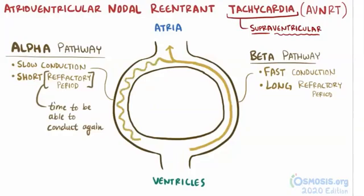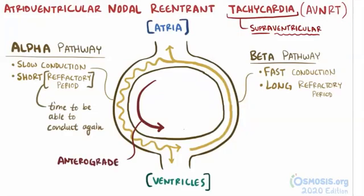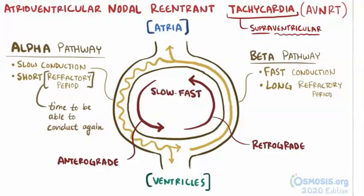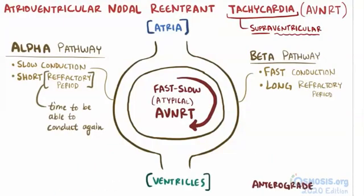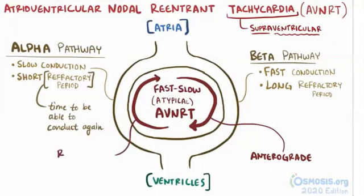So now you have this re-entrant loop set up that just keeps going and going, and every time around it causes both an atrial and a ventricular contraction, which again, just like AVRT, leads to high ventricular rates. This particular setup, where it goes down the slow pathway, or anterograde, and up the fast pathway, or retrograde, is called slow-fast AVNRT, or typical AVNRT. It's also possible to have the opposite, called fast-slow AVNRT, or atypical AVNRT, which as the name suggests is a lot less common than slow-fast AVNRT. With this type, the pathway goes down the fast pathway, or anterograde, and up the slow pathway, or retrograde.